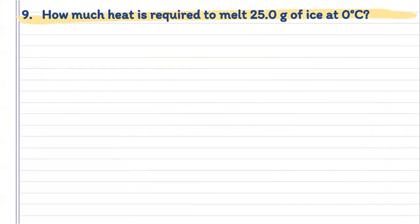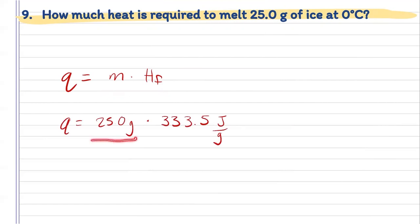Now we're just going to look at some practice problems. We want to know the heat required to melt 25 grams of ice at zero degrees Celsius. Melting is a phase change from solid to liquid, so we're going to have to use our heat of fusion. To find the heat needed, we're going to need our mass and its heat of fusion. Our mass is 25.0 grams, and the heat of fusion for solid ice is 335.5 joules per gram. Plugging those into my calculator, I get a heat needed of 8,340 joules.